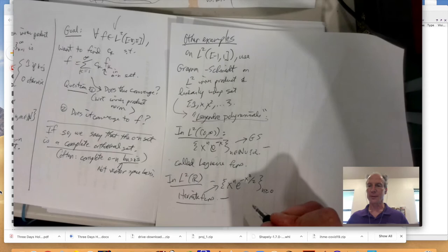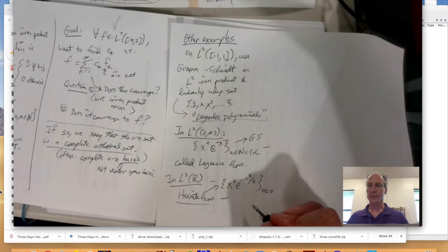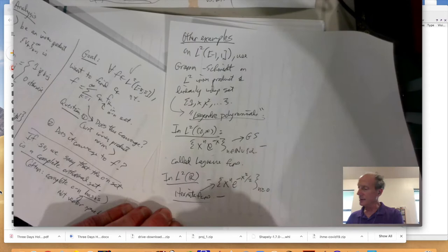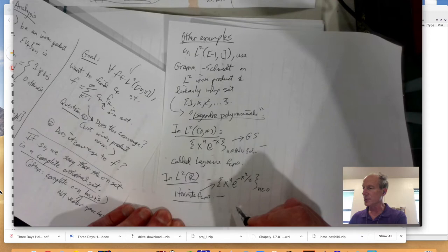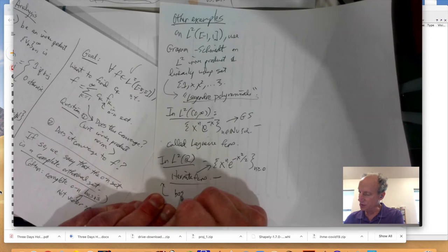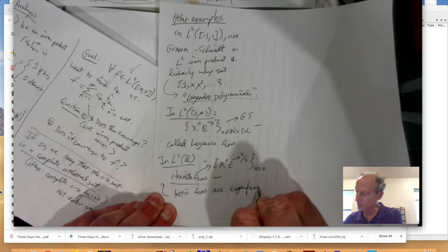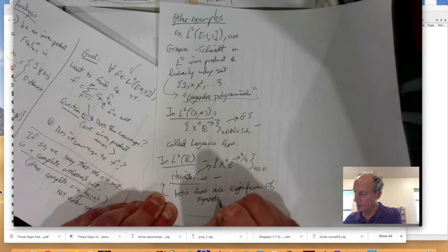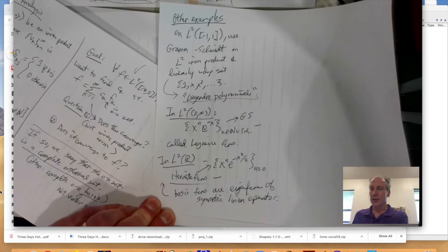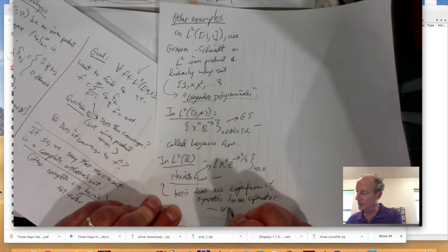And these are really important. And, yeah, in fact, you get a set of Hermite functions. And then it turns out that every one of these guys here, the basis functions are eigenfunctions of a symmetric linear operator. It's actually a differential operator. And just like with a symmetric matrix, the eigenvectors are perpendicular.